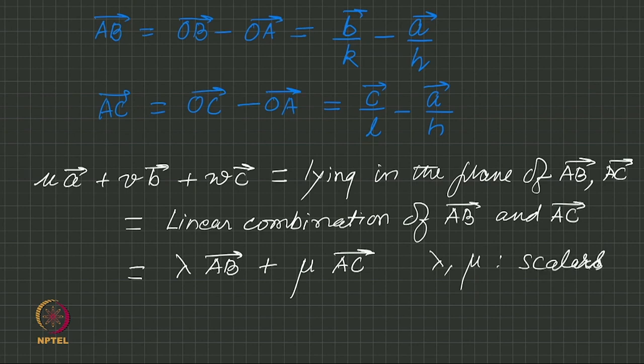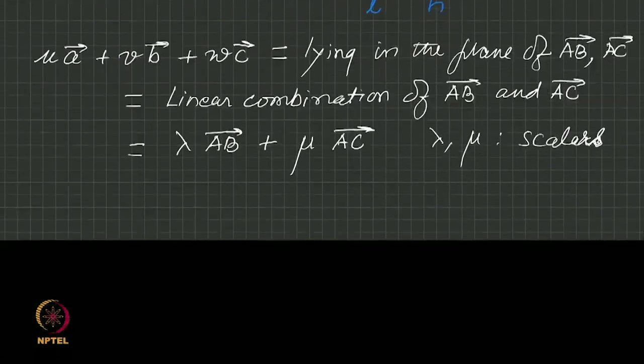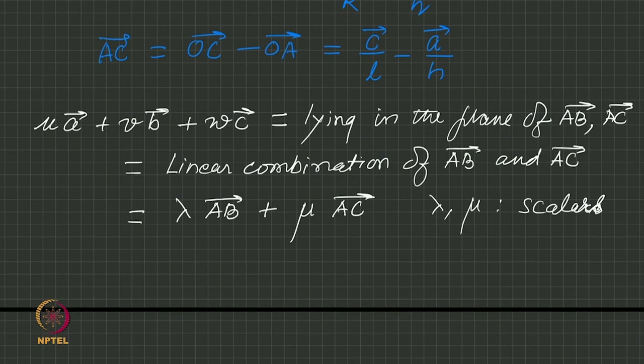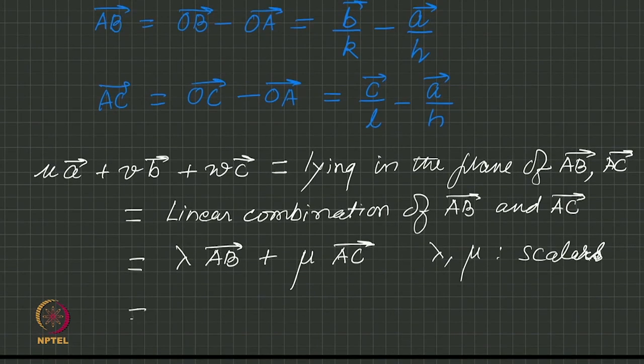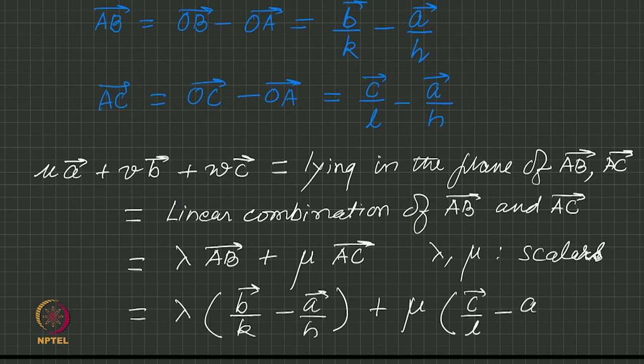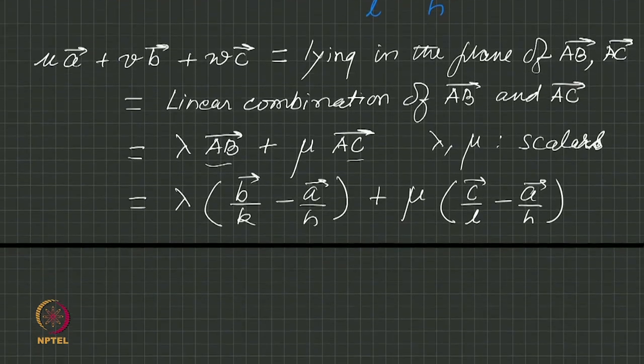So lambda times (b by k minus a by h) plus mu times (c by l minus a by h) is what we had found for AB and AC, just based on the definition of the Miller indices of the plane in which AB and AC are lying in terms of hkl.